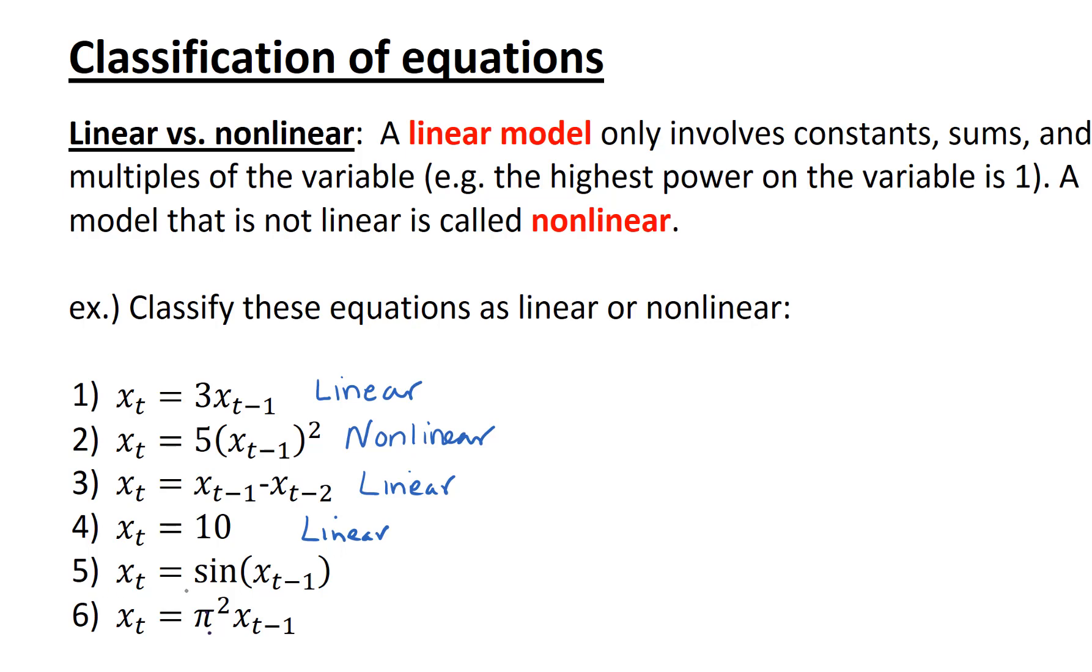For the fifth example, x sub t equals sine of x sub t minus 1. This is a nonlinear model. You might recall that sine is certainly a nonlinear curve. It's not simply constant sums and multiples of the variable. Another phrase for this linear model could be a linear combination. If you've taken linear algebra, that'll look familiar. So sine of x sub t minus 1 is certainly not a linear combination. It's a nonlinear model.